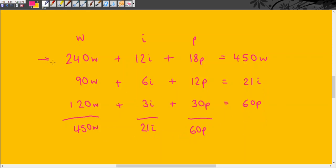Over here these are the inputs. So the wheat industry needs 240 wheat, 12 irons, and 18 pigs to produce 450 wheat, and so on along the table.